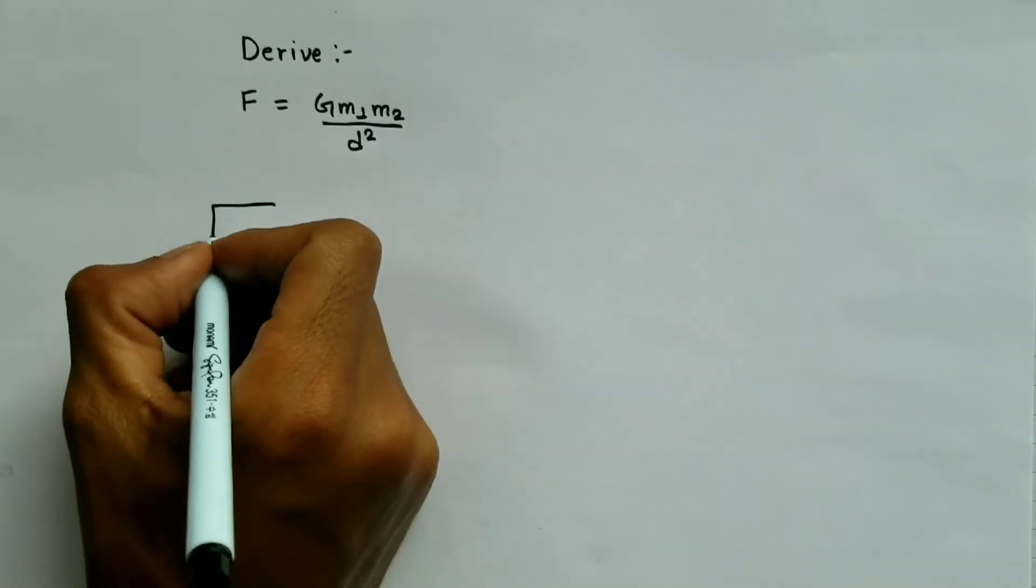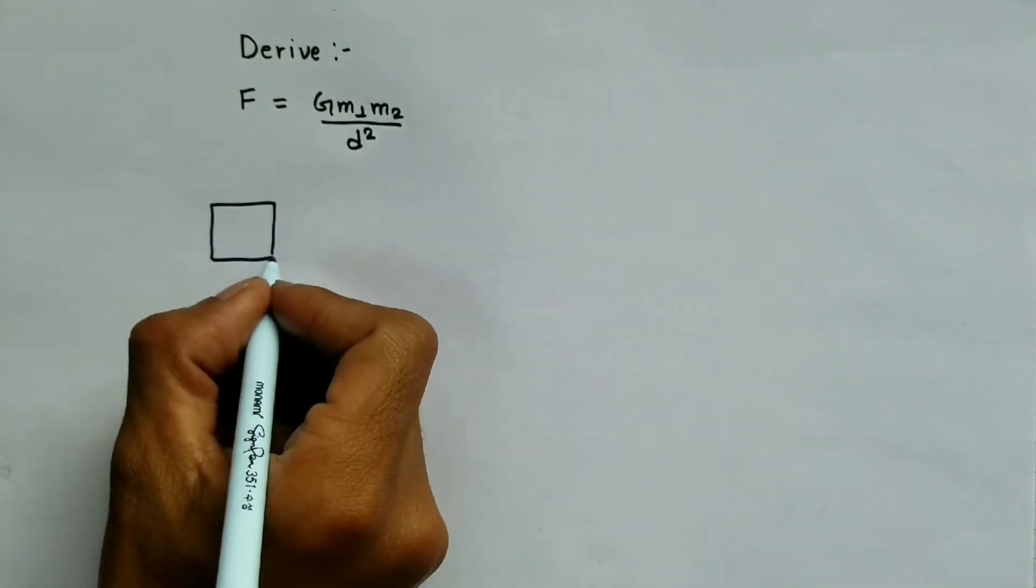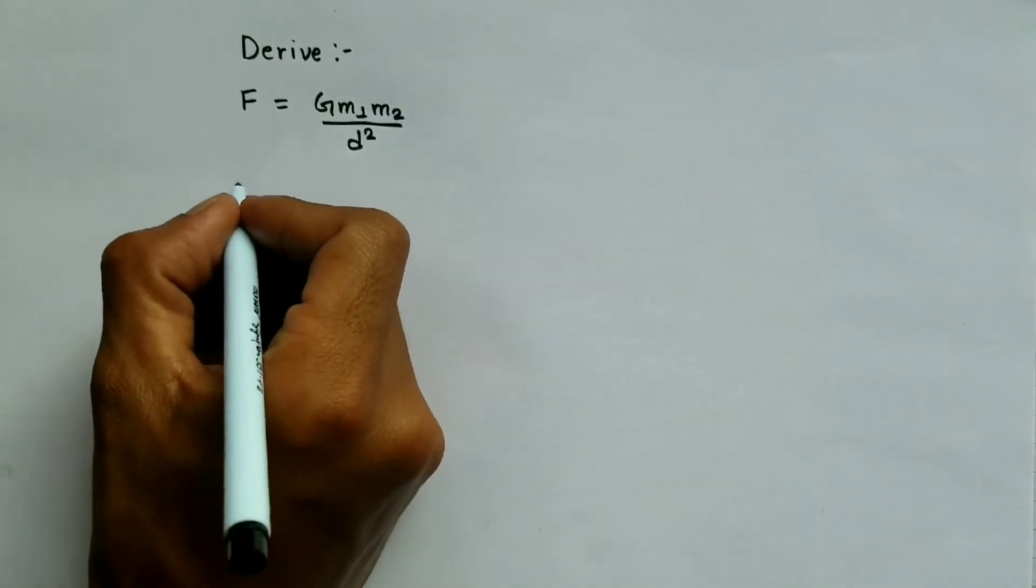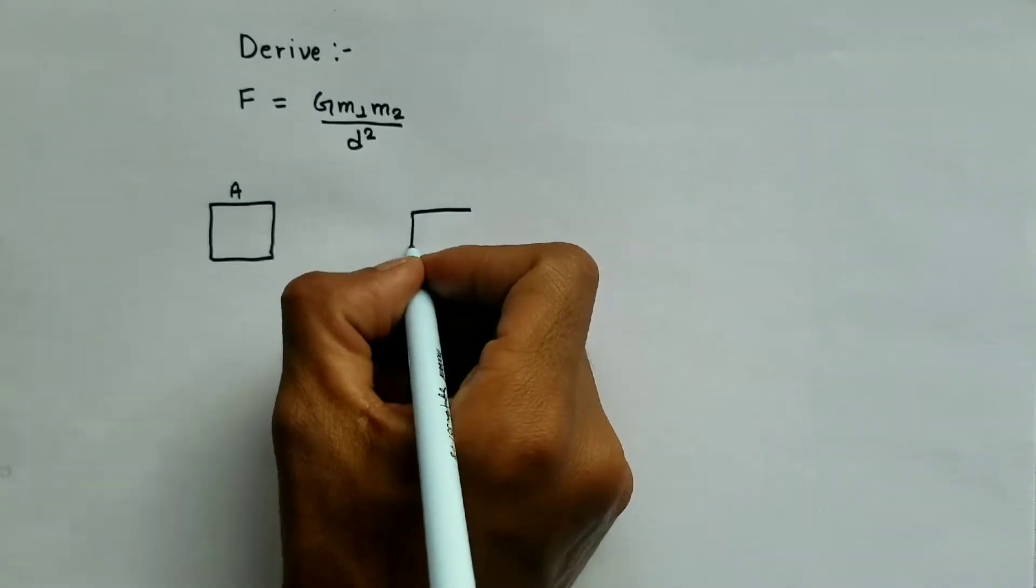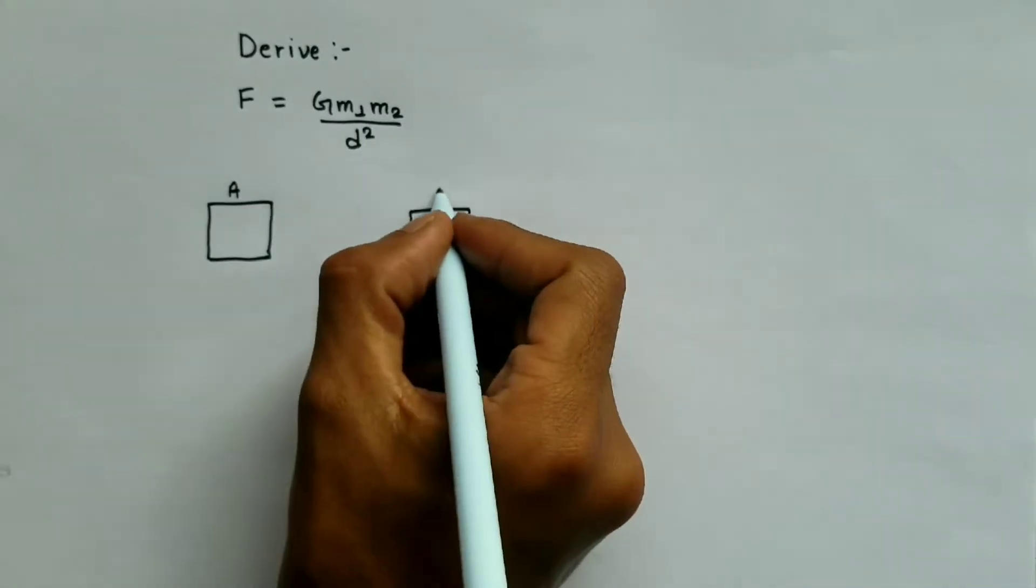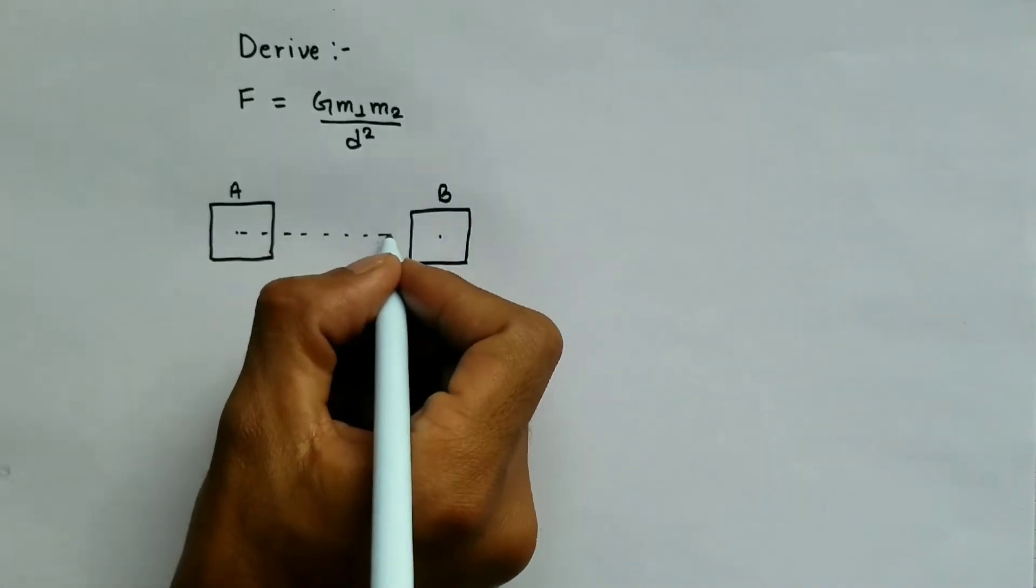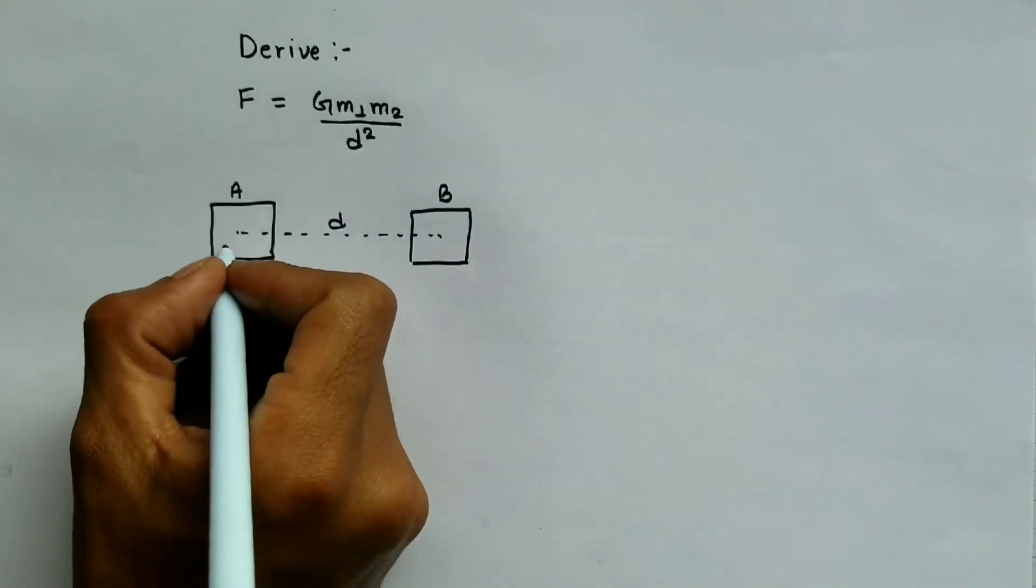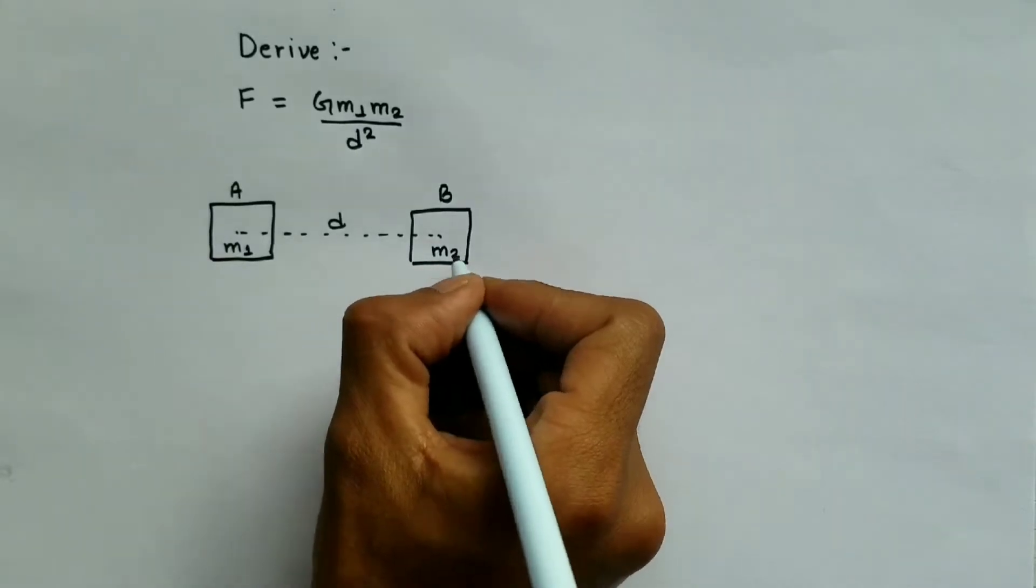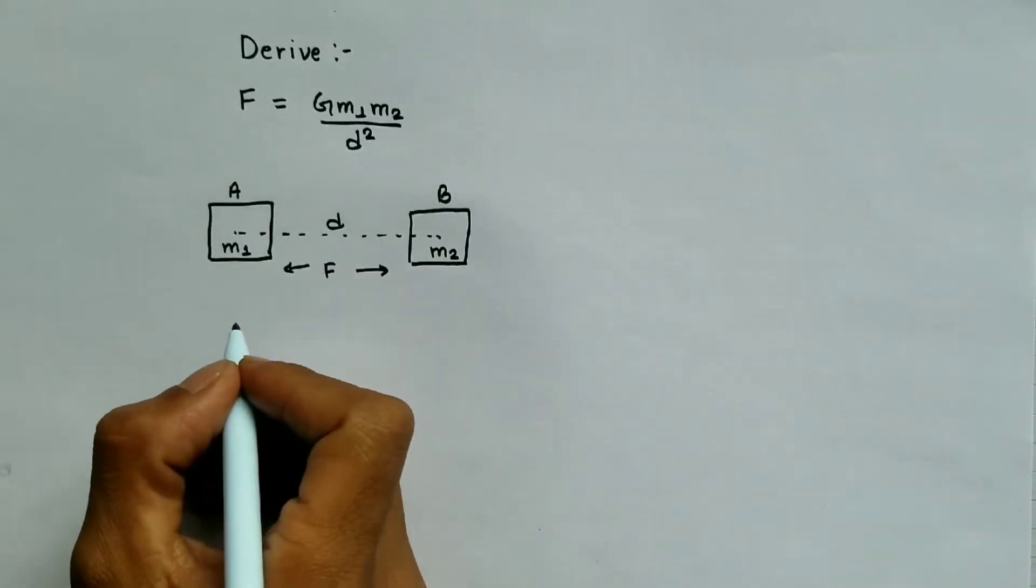First of all we are going to assume certain things and you need to make this figure while deriving the law. Let us consider there are two bodies A and B which are separated by distance d from their centers, and their masses are m1 and m2, and gravitational force between them is F.